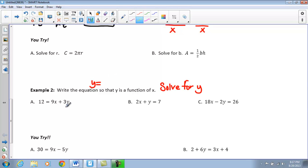So, I am going to start out here in letter A and kind of box in my Y. And I notice that it has three in front of it. So, it is being multiplied by three. But it also has 9X being added to it. So, the first thing I am going to do is I am going to subtract 9X from both sides.